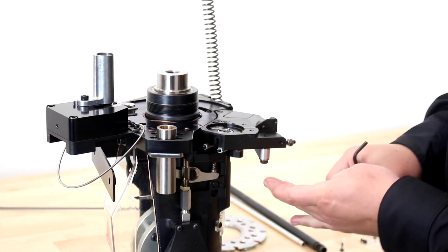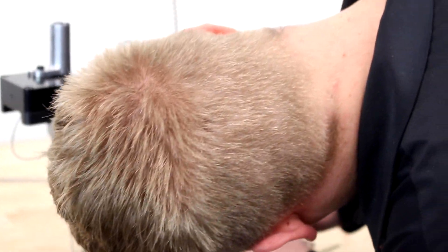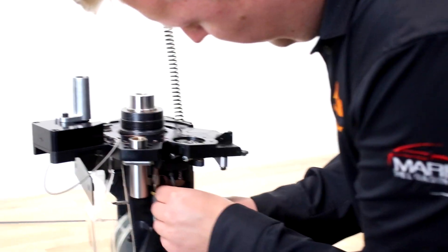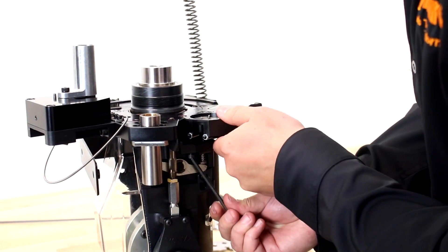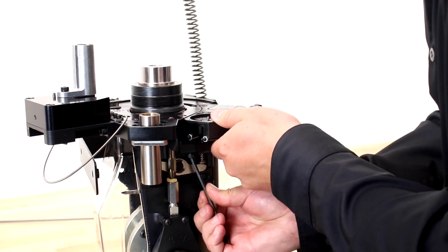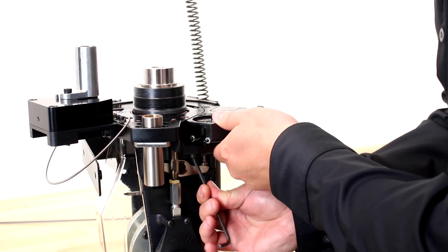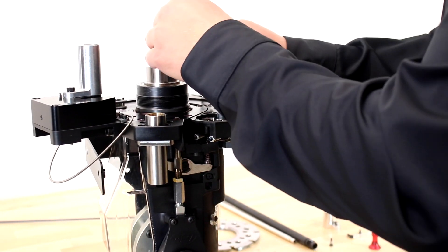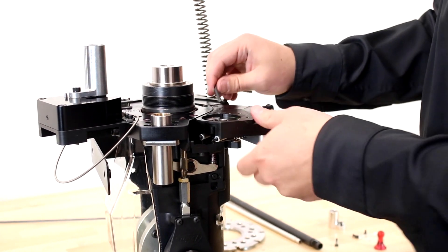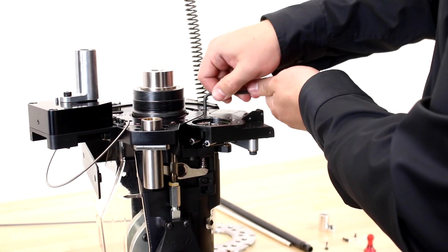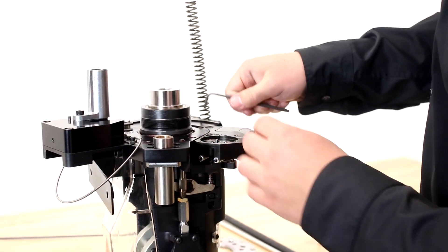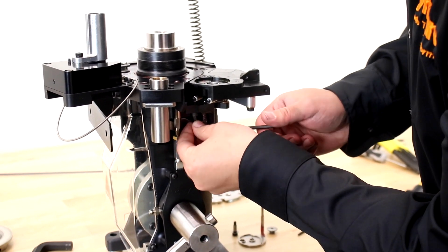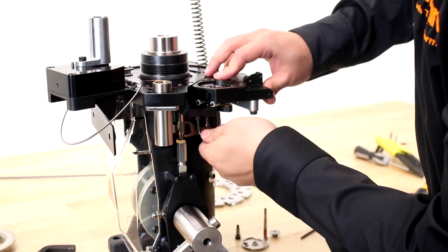I'm just going to lightly thread this in a couple times. You obviously don't want to tighten both sides all the way at first. Just snug up both sides and then fully tighten it. You should be pretty tight—you don't want your primer housing coming loose.